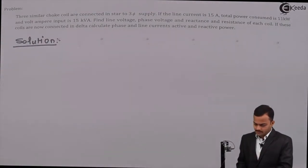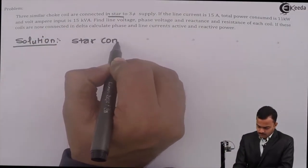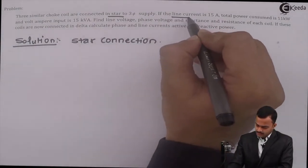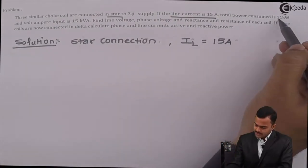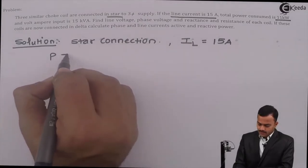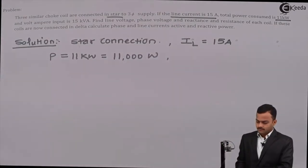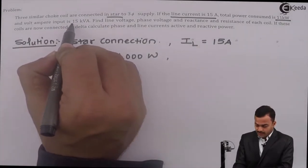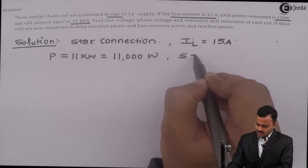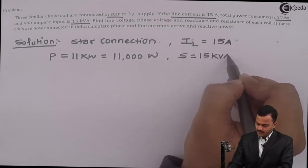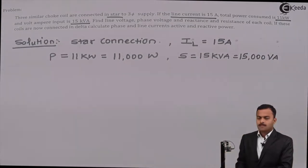Let's list out the given data. Star-connected load: line current IL = 15 ampere, total power consumed P = 11 kilowatt = 11,000 watt, and volt-ampere input — note the unit is kVA, so it is apparent power — S = 15 kVA = 15,000 volt-ampere.